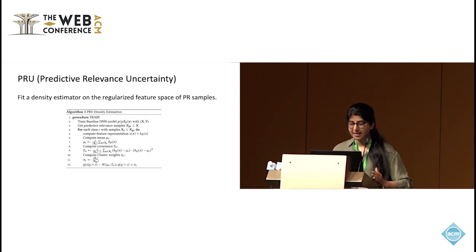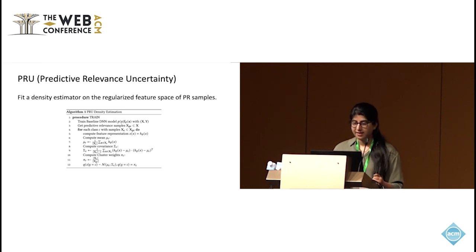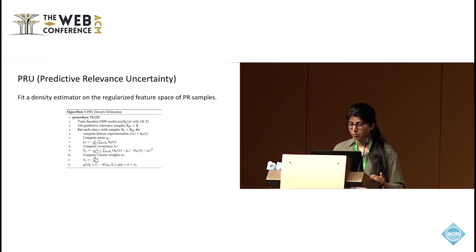Then we fit a density estimator on the regularized feature space of PR samples. Note that traditional uncertainty frameworks fit a density estimator on the regularized feature space of all training data, whereas here we fit it only on the PR samples. During inference, we use the likelihood from the fitted density estimator to quantify uncertainty. We show that PRU correctly defines the notion of uncertainty for the recommendation system, and demonstrate its efficacy in selective prediction and the downstream tasks of OOD detection and active learning.